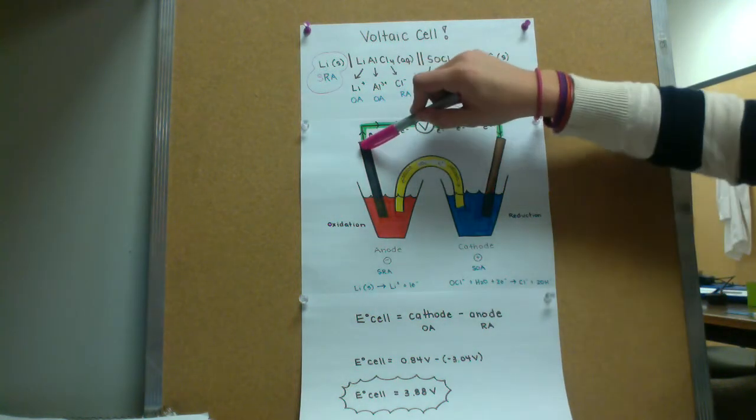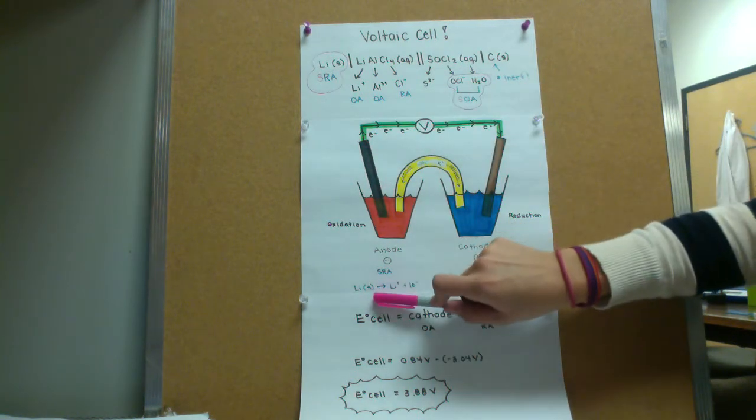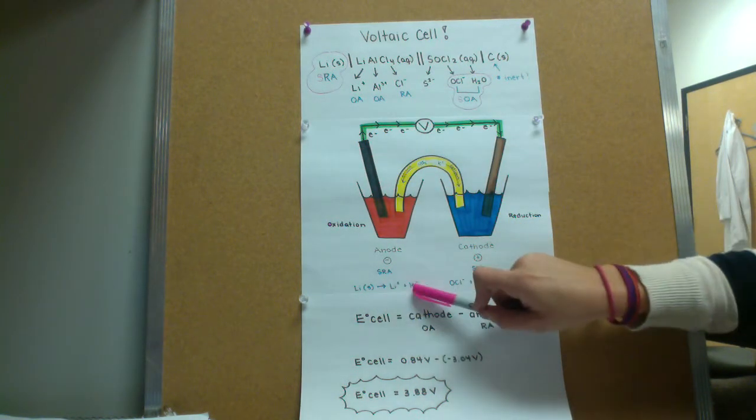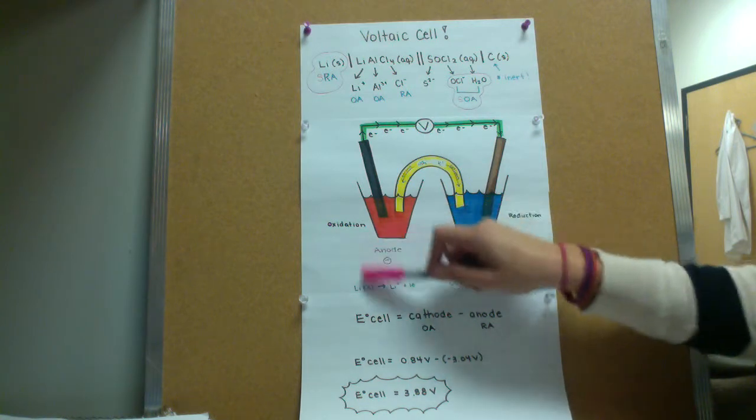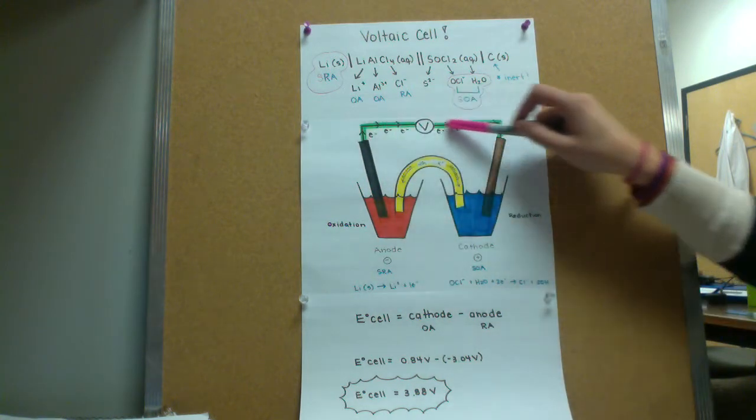On the anode side, which is the negative electrode, we have solid lithium turning into lithium ions and one electron. At the anode, we lose electrons through the external circuit.